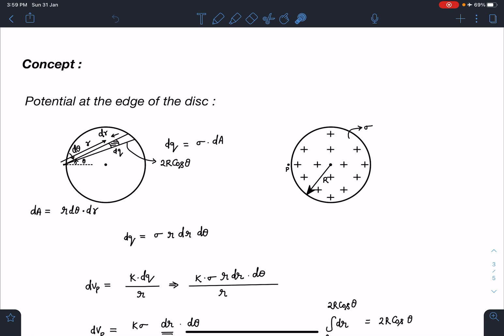This element is at an angle theta from the center line. Due to this small charge, potential at point P I can write as dVp.